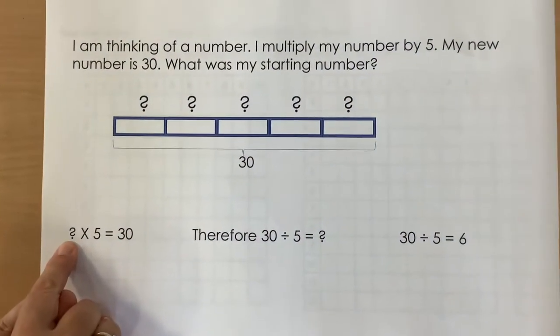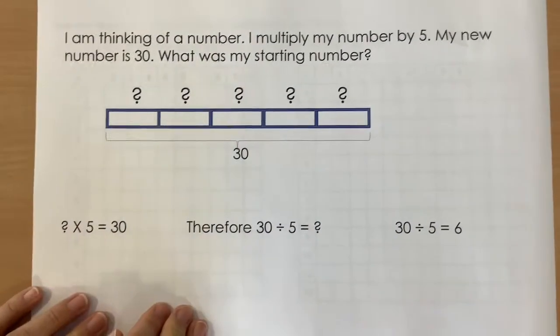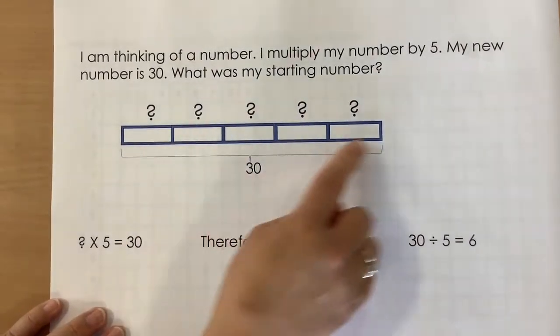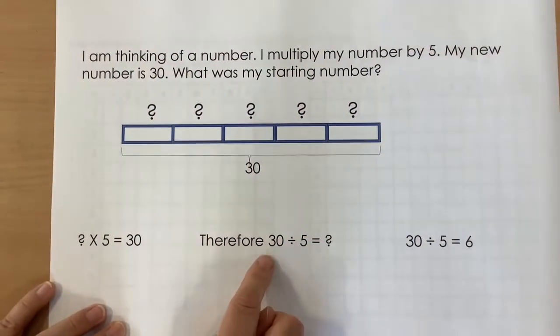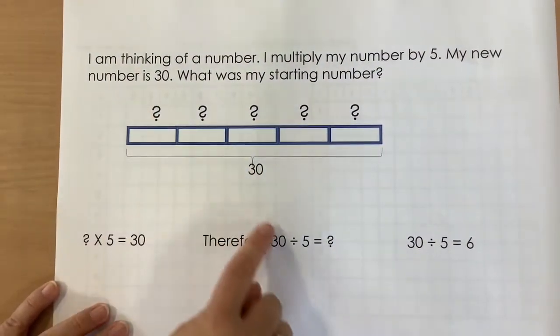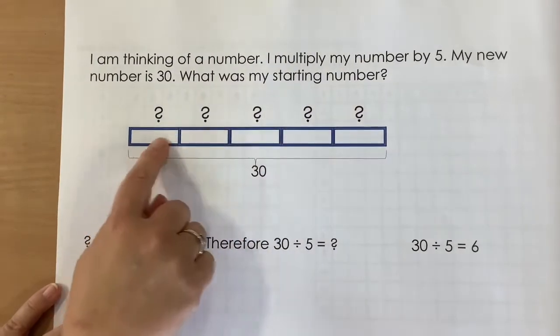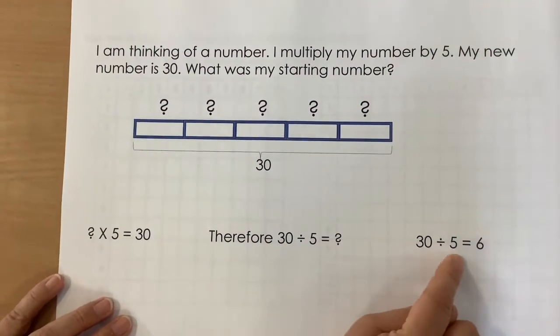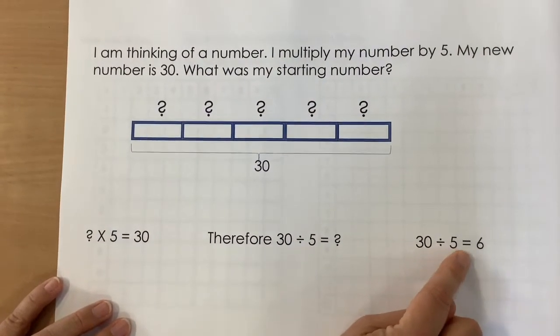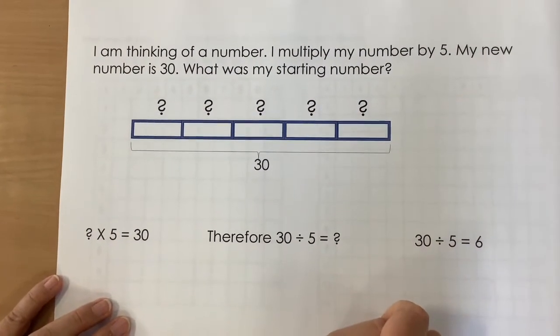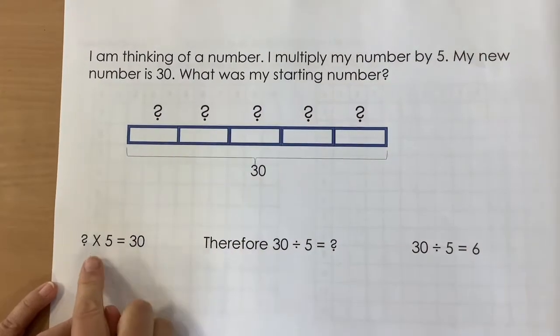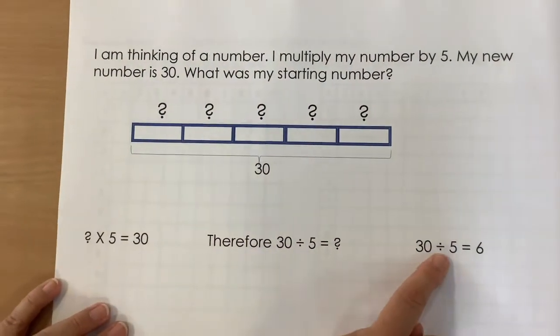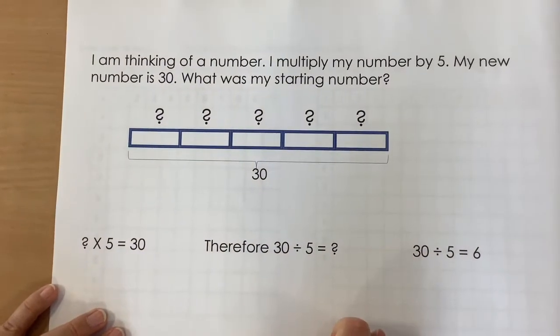So, what times 5 equals 30? We therefore can change that round using the inverse, looking at the bar model and understanding that we can divide 30 into 5 groups and that will tell us what our mystery number is. And I know my 5 times table, 30 divided by 5 equals 6. So we have used the inverse. We have started off with a multiplication problem and we have used the inverse division to help us find the answer.